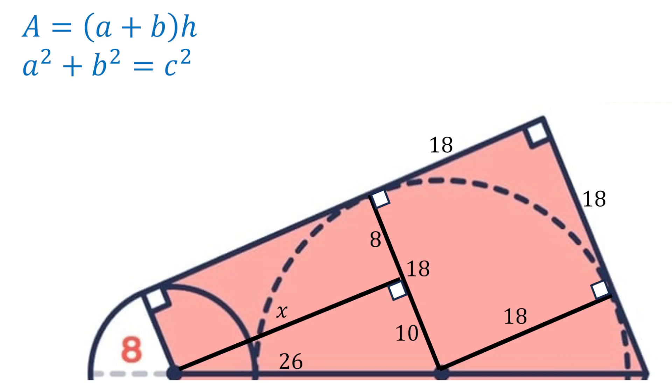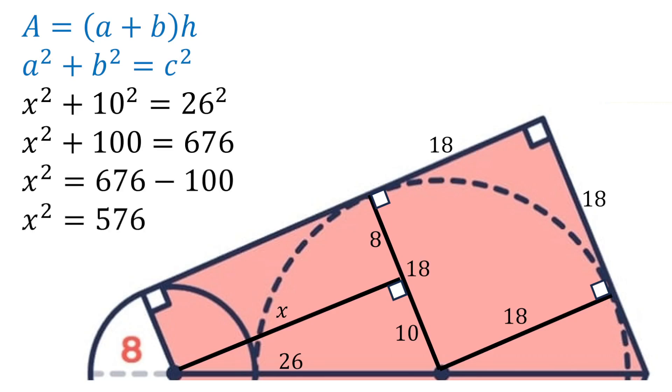a squared plus b squared is equal to c squared. So x squared plus 10 squared will be equal to 26 squared. 10 squared is 100, 26 squared is 676. Transposing and subtracting gives us that x squared is 576, or in other words x is the square root of 576 which is 24.